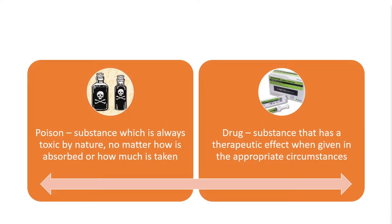Toxidromic illness can be caused by two subcategories of chemical. First, poisons — substances that are always toxic regardless of how much is absorbed or how it is taken. On the other side, drugs are chemicals that can still have adverse effects but are picked from nature or synthesized because they have a therapeutic effect when given in the right circumstances or dose. Both agents can lead to intoxication and toxidromic illness — they're separate subcategories, but chemicals can fall into both categories at different points.